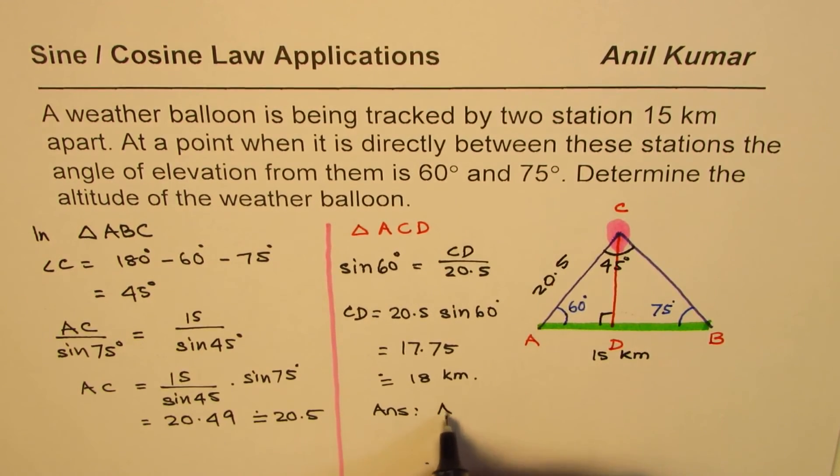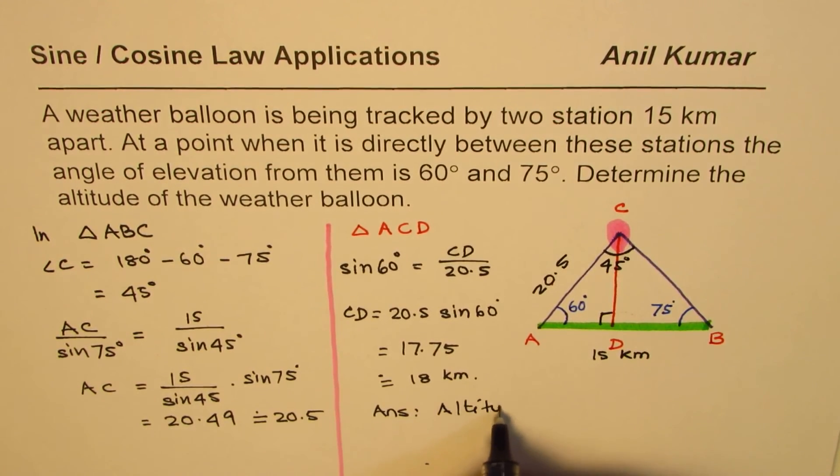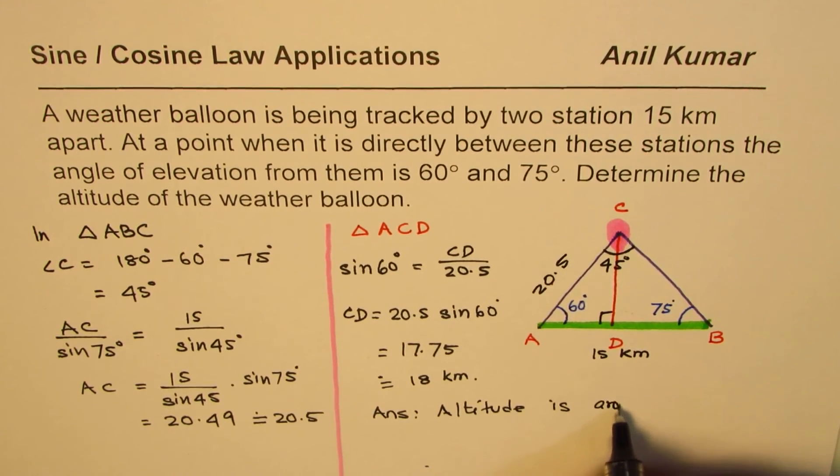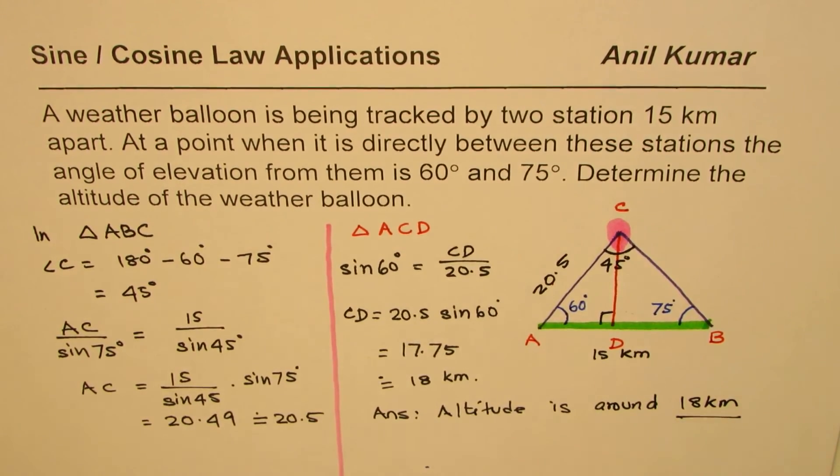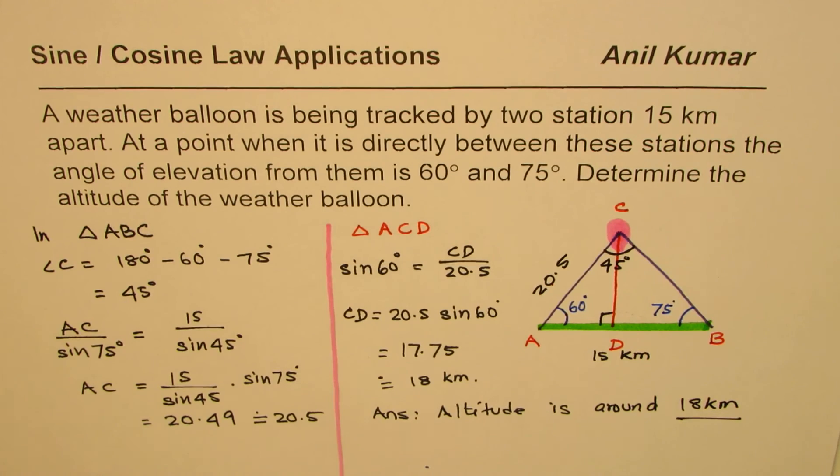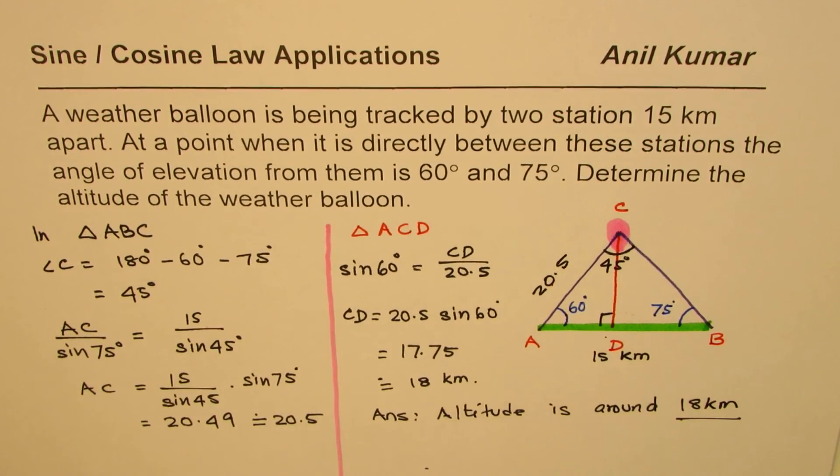We can say the answer is altitude is around 18 kilometers. So that is how you could apply the sine law along with the combination of trigonometric properties which you learn for 90 degrees to get the altitude. I'm Anil Kumar and I hope that helps. Thank you and all the best.